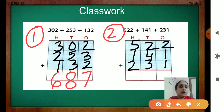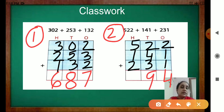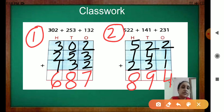Okay. Now the next one — 522 plus 141 plus 231. 1s place: 2 plus 1 is 3, and 3 plus 1 is 4. Now add the 10s place: 2 plus 4 is 6, and 6 plus 3 is 9. Now the 100s place: 5 plus 1 is 6, and 6 plus 2 is 8. Now check it — have you done it correct or not? Finished your classwork. Done.